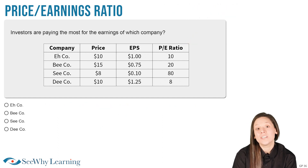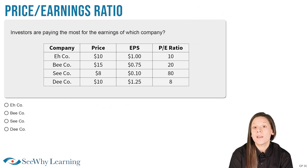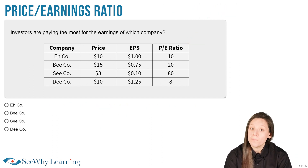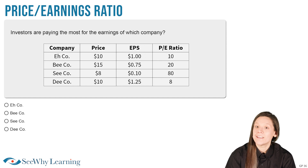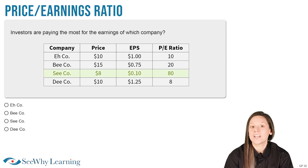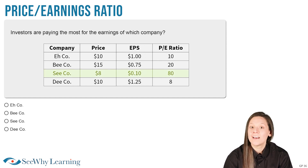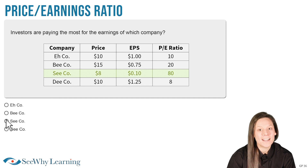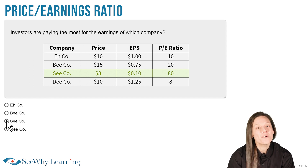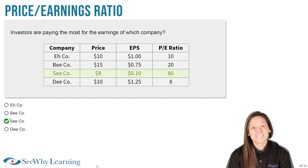So the question — investors are paying the most for the earnings of which company? We can now see it is C Co, which has the highest price-earnings ratio of 80. Let's select that answer, and we're correct!